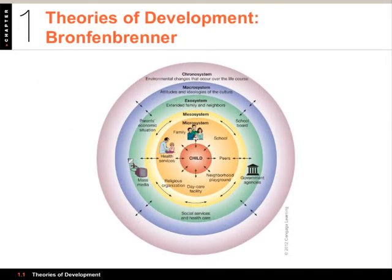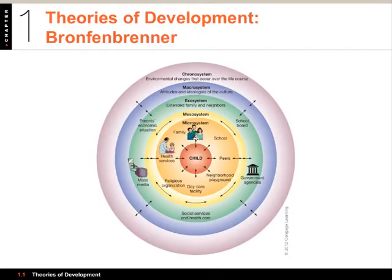Just a couple more theories before we turn to research methods. Next is Bronfenbrenner's ecological approach. According to Urie Bronfenbrenner, you really need to look at how a person fits within their situation or circumstances. You look at the child and parents influencing each other, and you also look at the microsystem — family, school, peers; a mesosystem in between; the exosystem — extended family, parents' jobs, government; macrosystems about an entire cultural system — for instance, the strong Protestant work ethic in the United States that influences how people relate to children; and the chronosystem, the changes that occur over the life course.